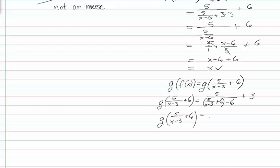So we have five over x minus three plus six minus six gives us zero plus three. We have a fraction in the denominator, so I'll flip that over and multiply. So now I have five over one times x minus three over five.